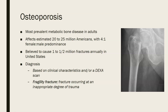Osteoporosis is the most prevalent metabolic bone disease in adults. It affects an estimated 20 to 25 million Americans, with a four-to-one female-to-male predominance. It is believed to cause one to one and a half million fractures annually in the United States.